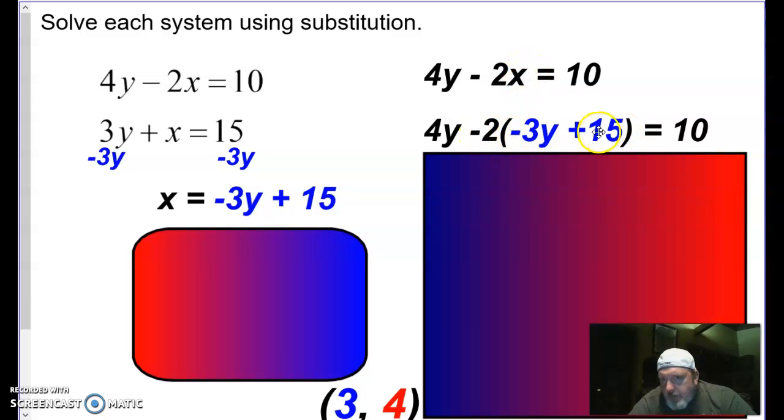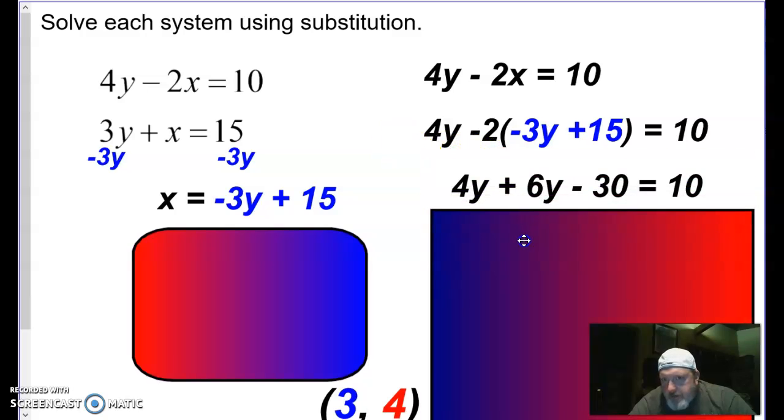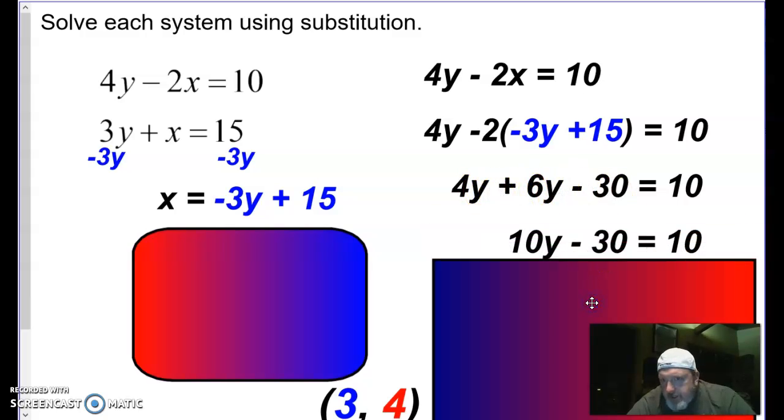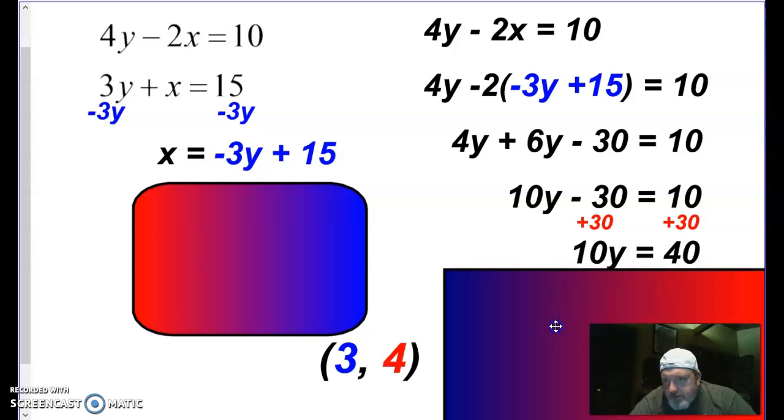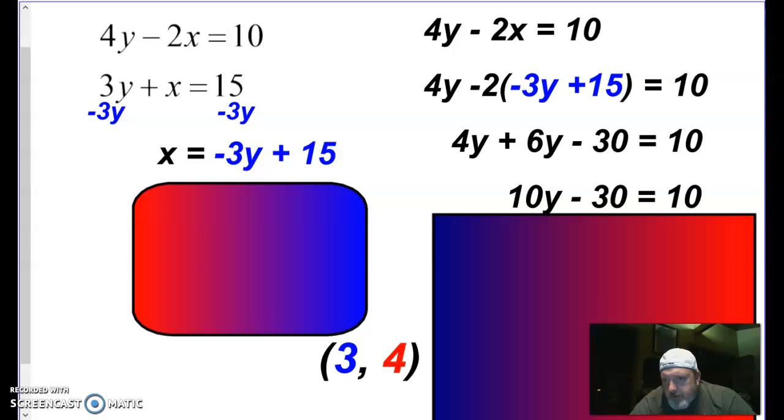Now I can multiply this here. So I'm going to distribute. So 4y is going to stay the same. Negative 2 times negative 3y is 6y minus 30 equal 10. I can add my y's together. So I get 10y minus 30 equal to 10. My next step, I can add 30 to the other side. So 10y is 40. And then ultimately I will divide and y is going to be 4.